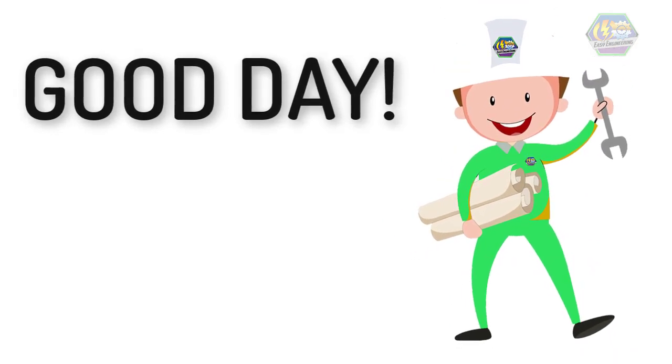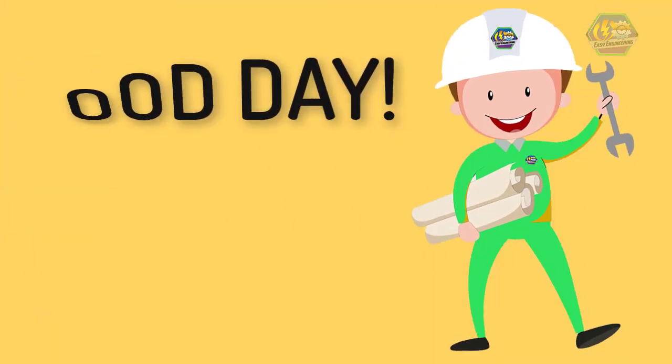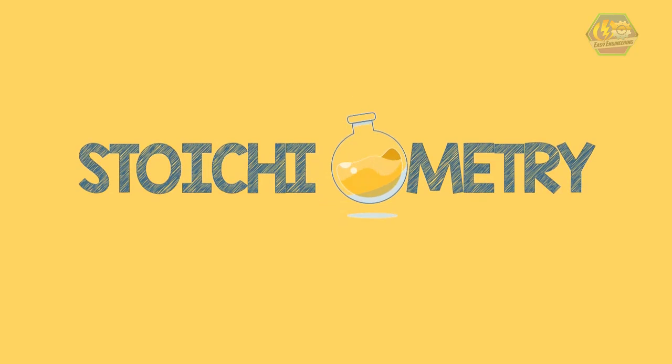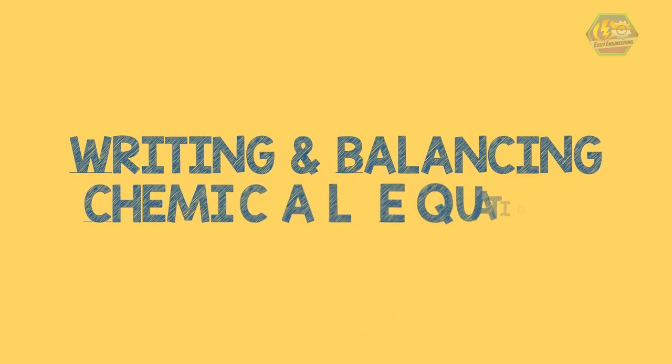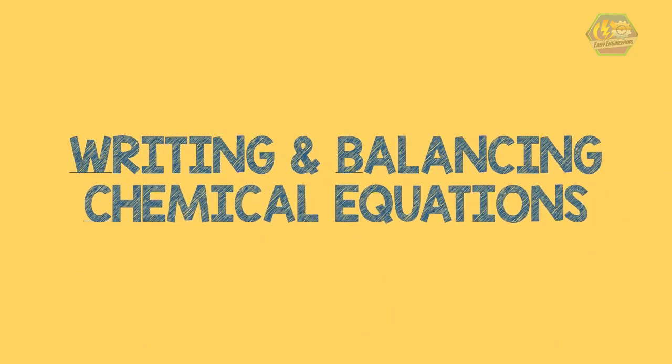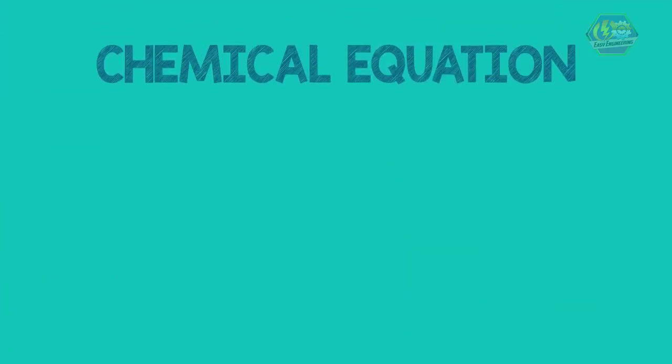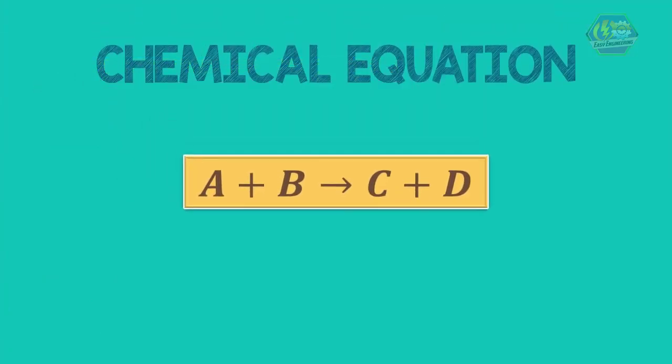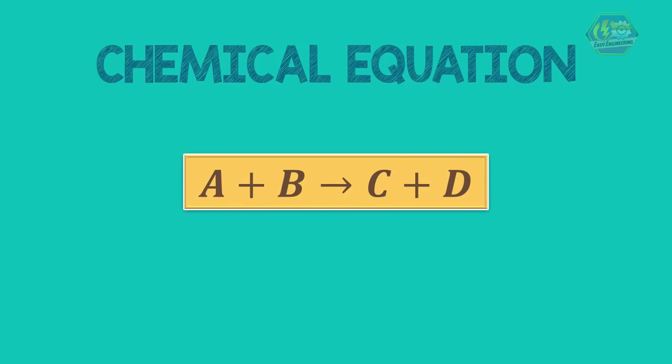Good day learners, this is Easy Engineering. This time we're going to talk about stoichiometry, writing and balancing chemical equations. A chemical equation has reactor formulas on the left of the yield arrow and product formulas on the right. Here, A plus B are the reactor formulas and C plus D are the product formulas. The arrow symbol is read as yield.